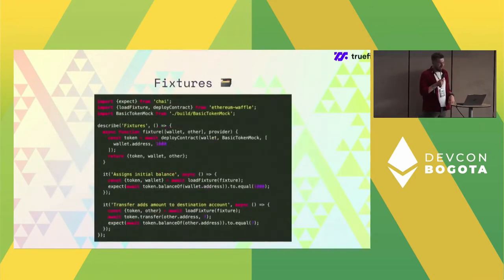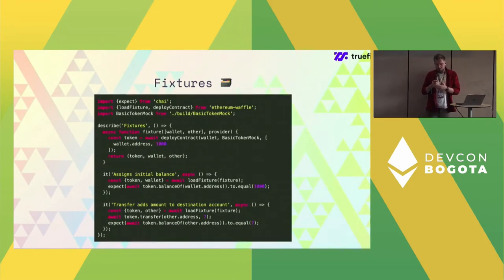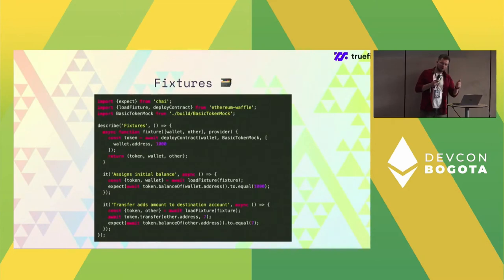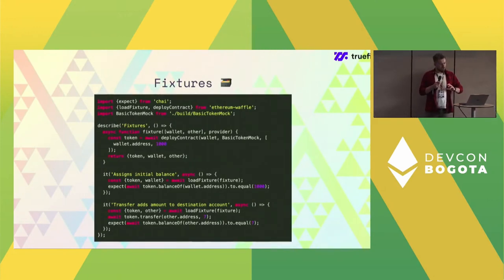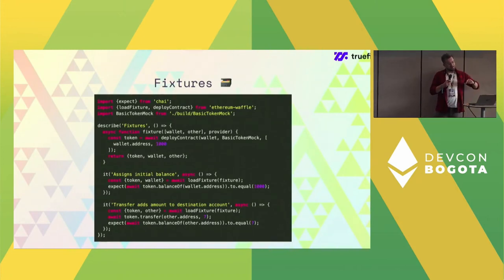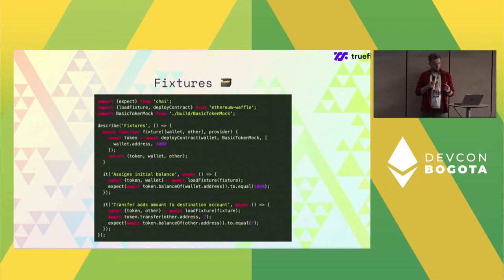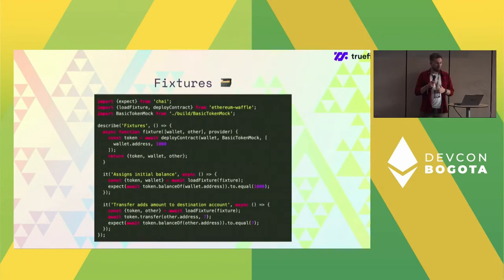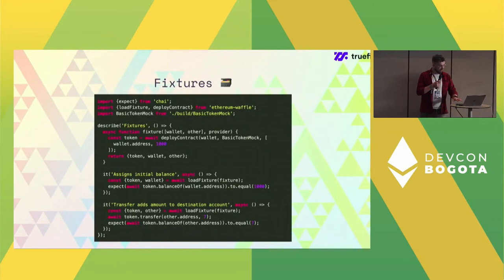The last major feature is fixtures, which is extremely powerful. A good rule of testing is that all tests should be independent of each other, with each test having a separate setup. Fixtures allow us to revert the state of the blockchain to a previous state — we perform setup transactions, deploy contracts, maybe do some initial transactions, and save that as a fixture. Then each test invokes the fixture so each test starts from the same state, without needing to redo all the transactions again, and this is one of the things that makes Waffle so fast.